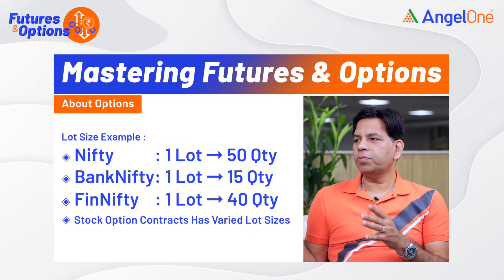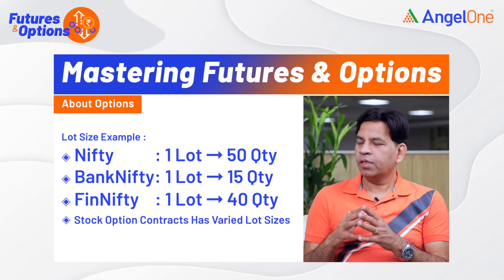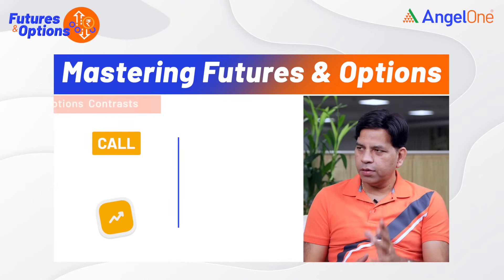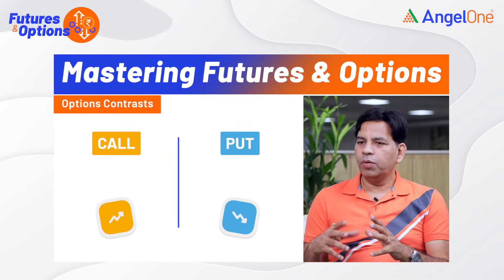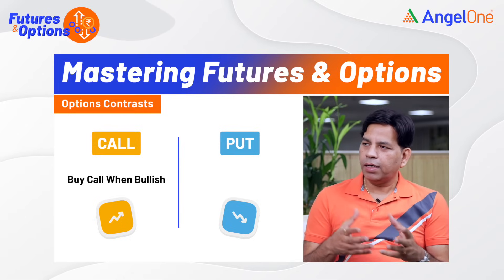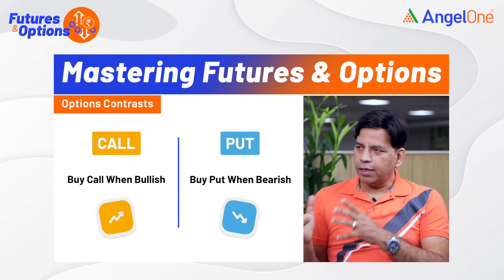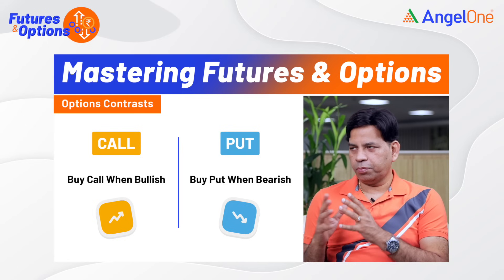You also have stock options with their own lot sizes. Options have expiry dates — weekly expiry and monthly expiry — which you have to understand well. Options are basically two types: call option and put option. When you are bullish on the market, you will generally buy a call option. When you are bearish, you will generally buy a put option.